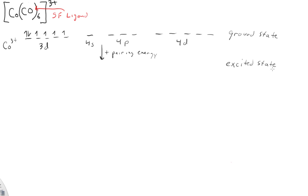Again this is because we have a strong field ligand. So what happens to the 3D, we have six electrons and they're all paired. And the 4S and 4P are hybridized with these two D orbitals. And we end up with what's called an inner d orbital complex.